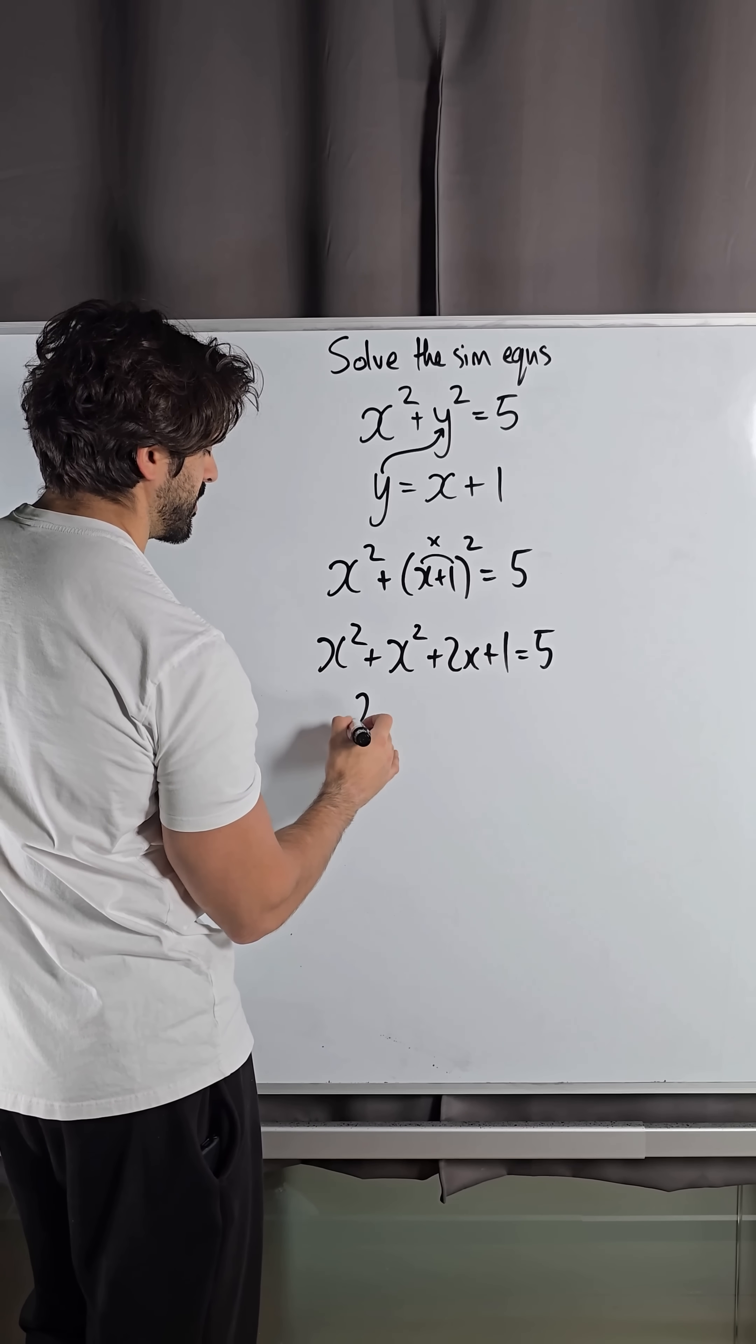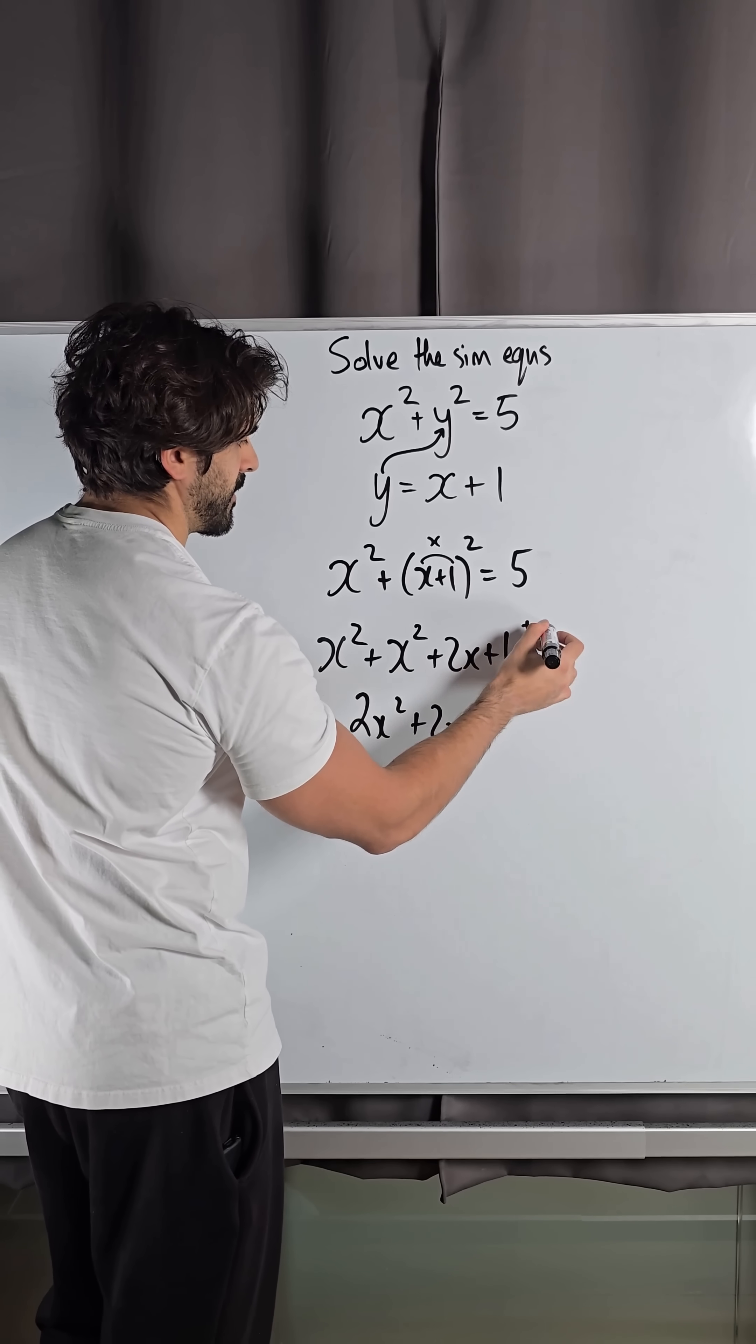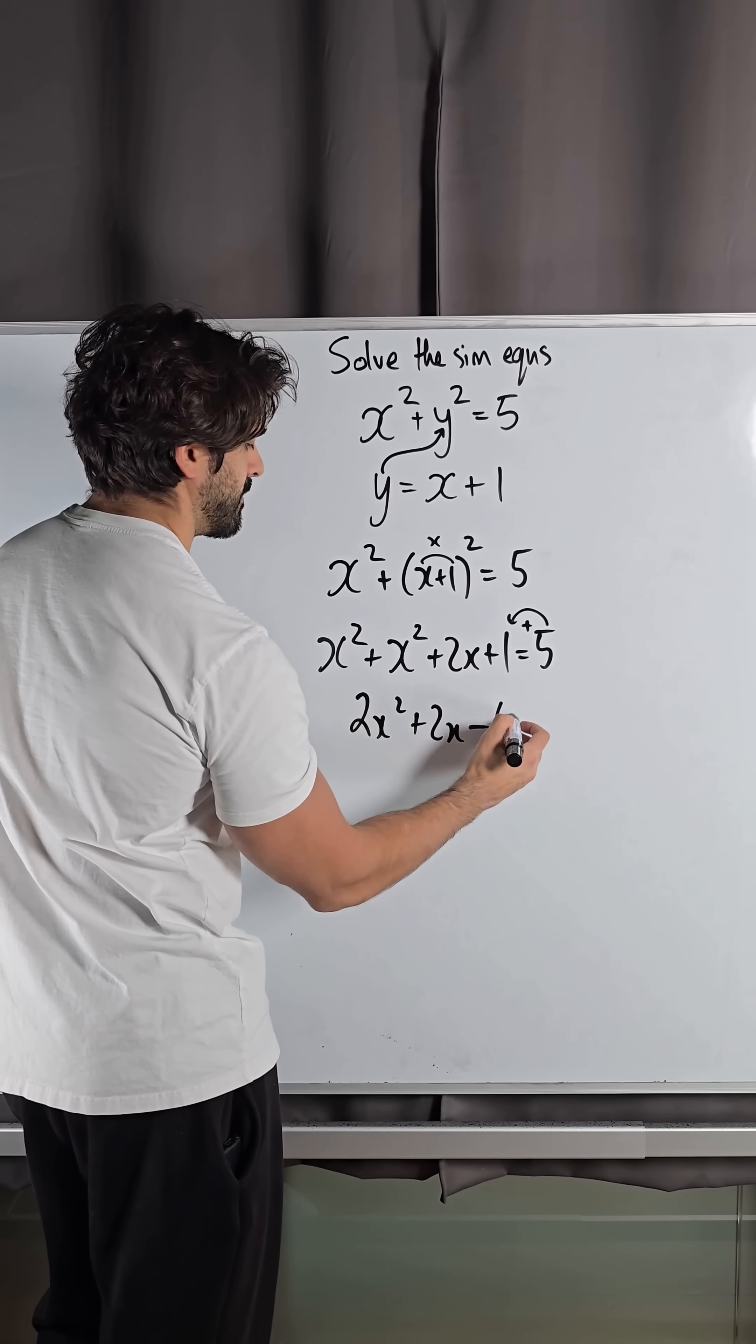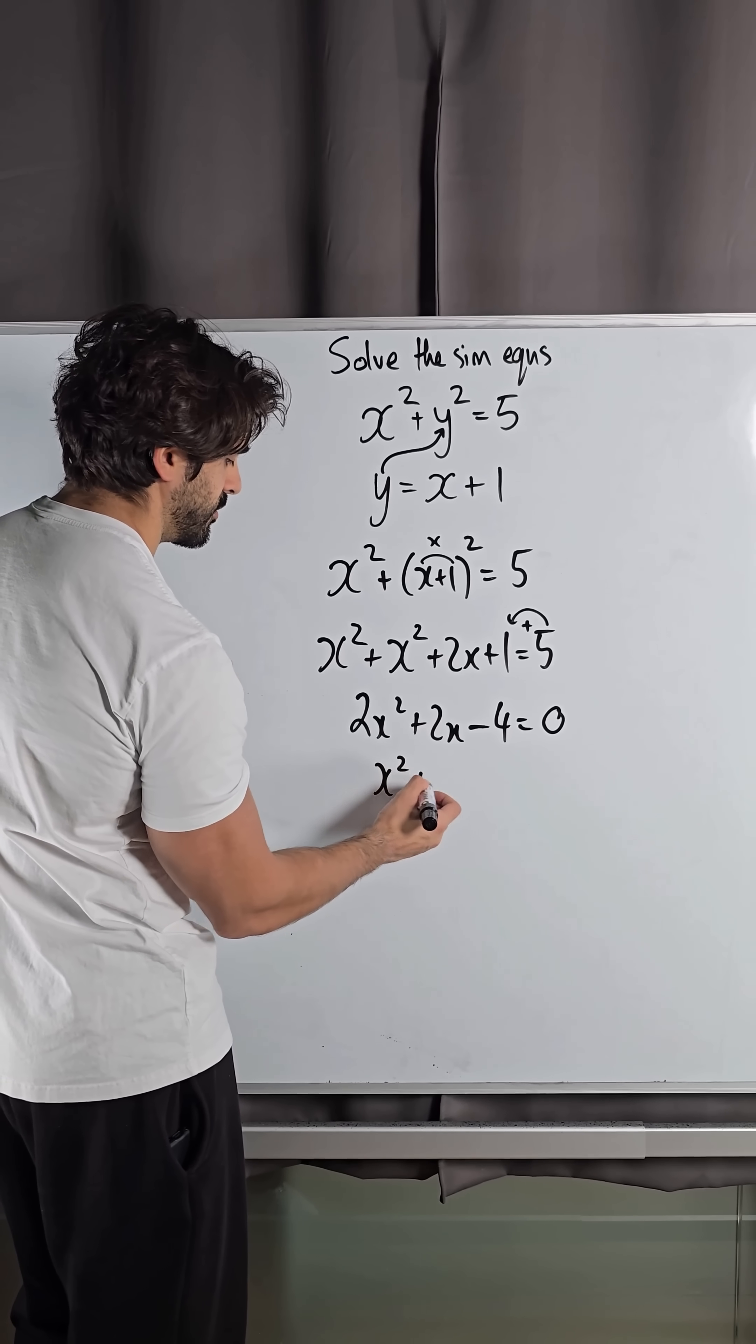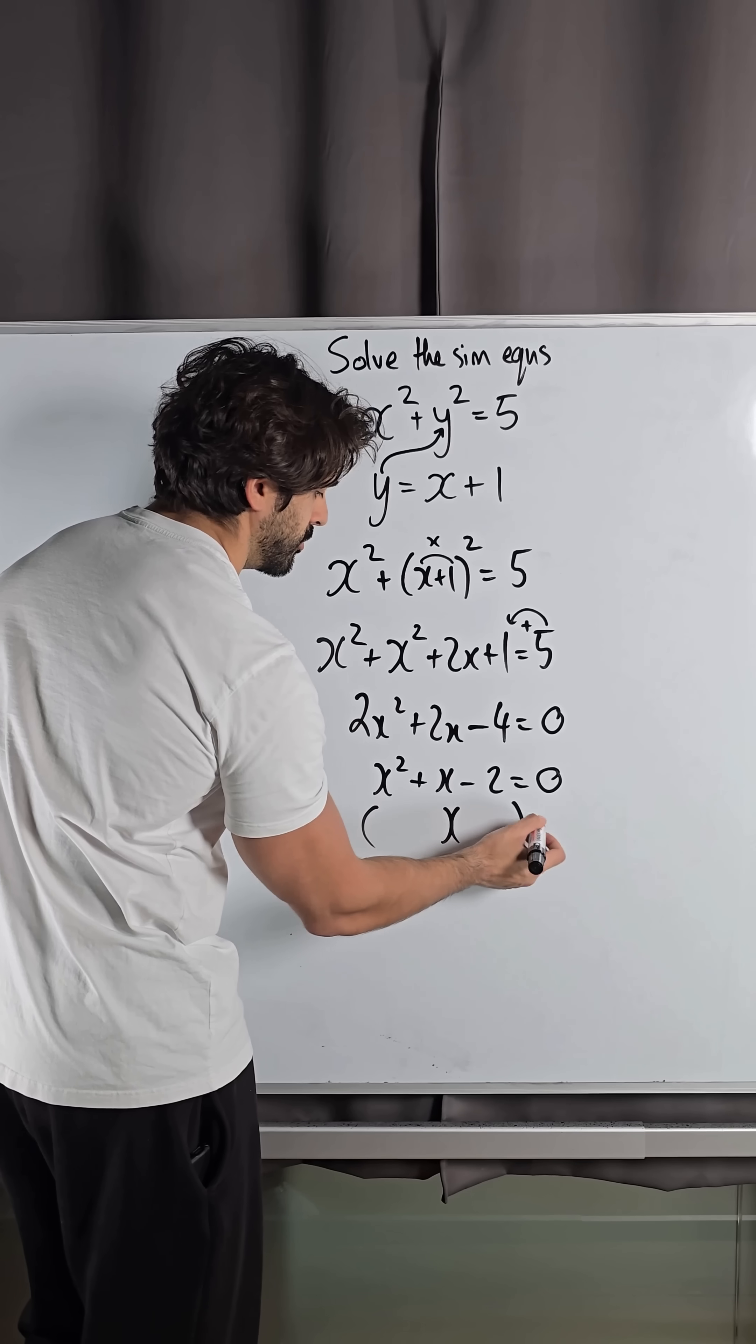Simplify: we get x squared plus x squared is 2x squared. We have the 2x, then that plus 1, and we're going to bring over the 5 and subtract it, so 1 minus 5 is minus 4. Here we have all even coefficients, so we can divide through by 2, and this factorizes beautifully.